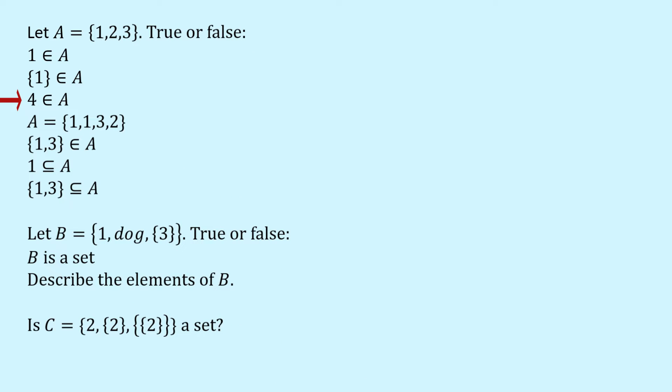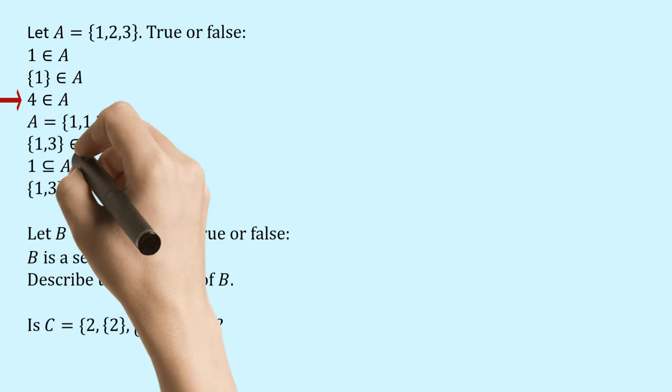What about 4 is an element of A? Well 4 is not an element of A. A has only got three elements 1, 2 and 3 and so 4 is not an element of A. So this is false.